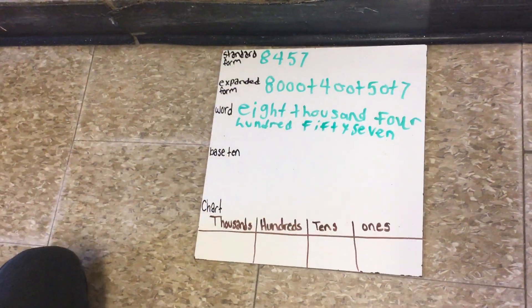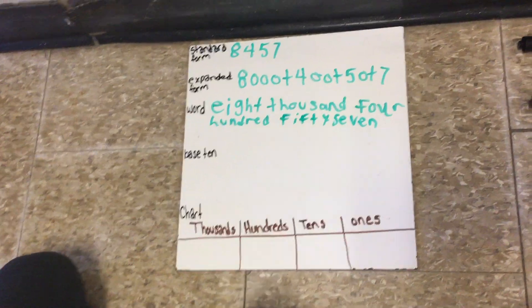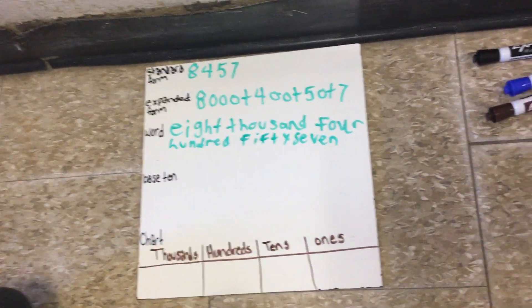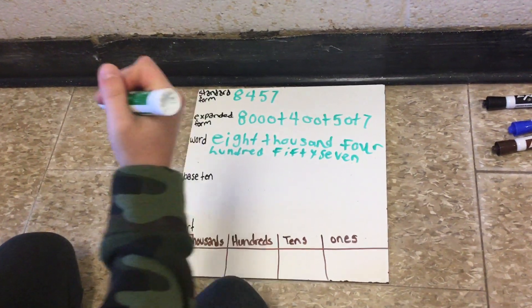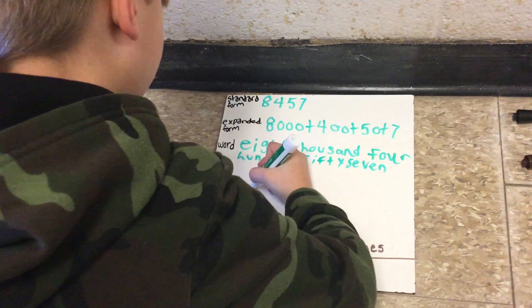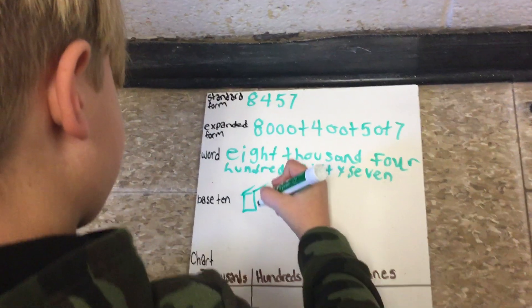Then for base 10 you need to draw the number in base 10, so with thousands, hundreds, tens, and ones. First you draw 8,000 blocks.